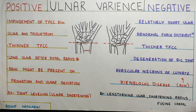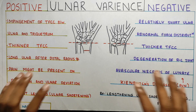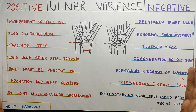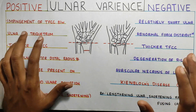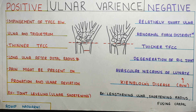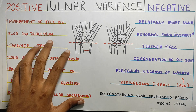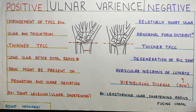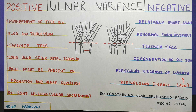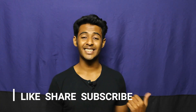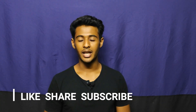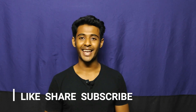I'll leave the detailed surgical specifics to the specialists. That covers the whole concept of positive and negative ulnar variance. In the next video, we will go on to the movements and biomechanics of the wrist joint, so stay tuned. Thanks for watching — if you like my content, please like, share, and subscribe to the channel.